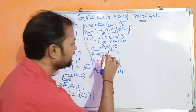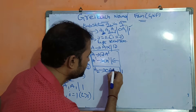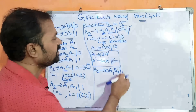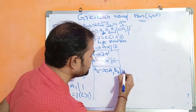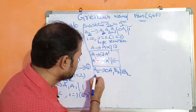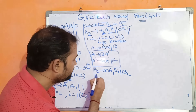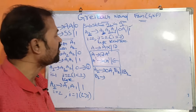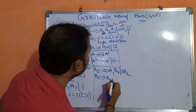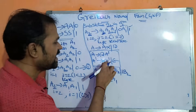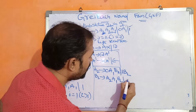And B2 implies alpha A-dash | epsilon, so: B2 implies A2 A1 B2 | epsilon.